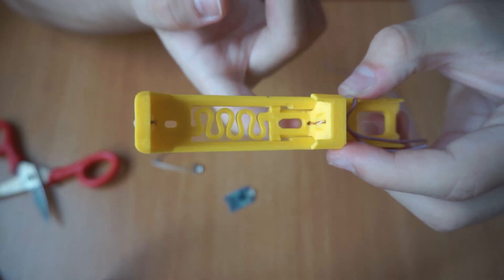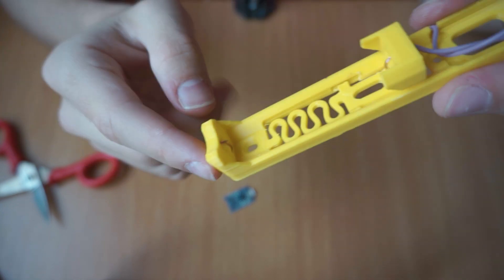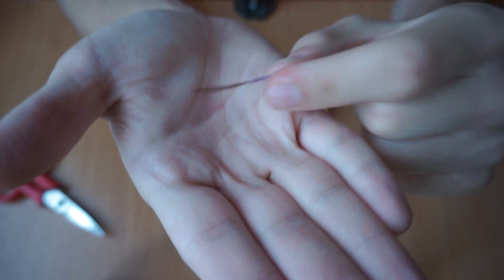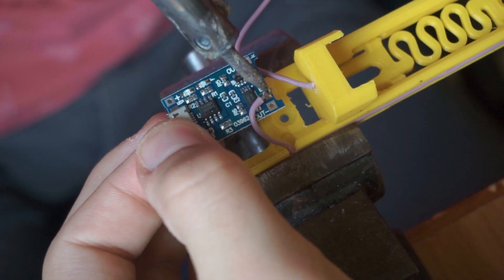First, you need a 3D printer for the 3D printed piece, then 20 centimeters of electrical wires that can carry a minimum of one amp, and a module with the IC TP4065.